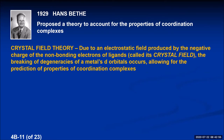Crystal field theory states that due to an electrostatic field produced by the negative charges of the non-bonding electrons of the ligands — called its crystal field — the breaking of degeneracies of a metal's d orbitals occurs, allowing for the prediction of properties of coordination complexes. If you have a metal ion and bring ligands around it, the ligands all have lone pairs that are negative, surrounding the metal ion in a field of negative charge. Because it approaches in an organized fashion, it's called a crystal field. These negative charges affect the energy of the metal's d orbitals — the theory says it breaks the degeneracies.